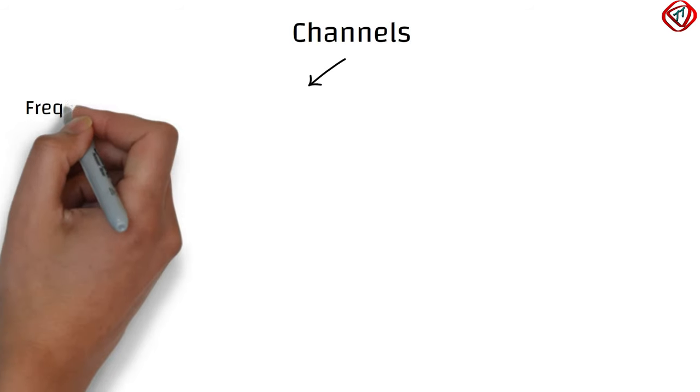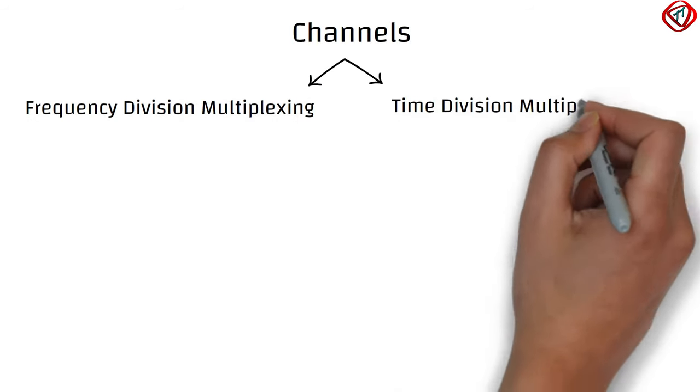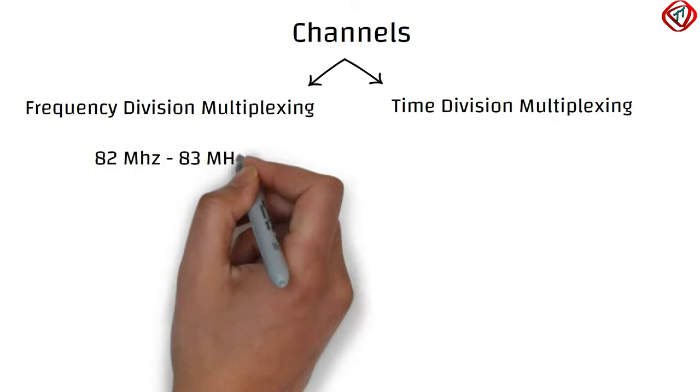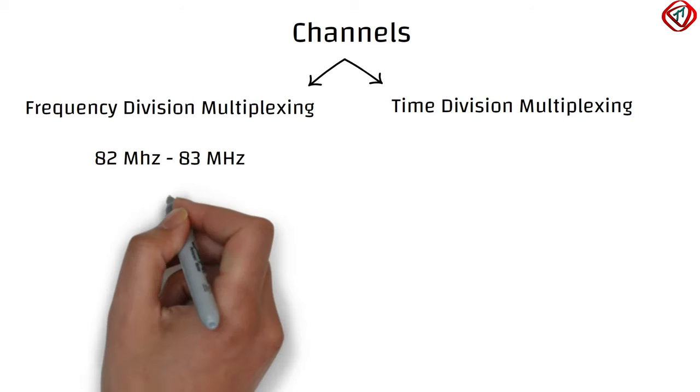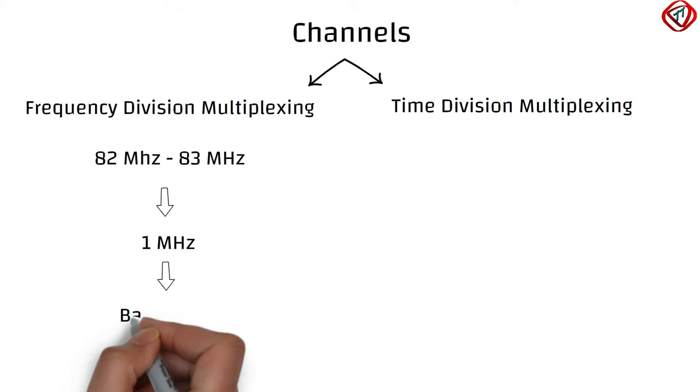The channels are created with frequency division multiplexing or time division multiplexing. Suppose you have a frequency range of 82 MHz to 83 MHz. The difference between higher and lower frequency is 1 MHz. It is called bandwidth.